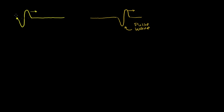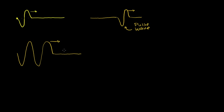Now, if I kept doing that — if I kept going up and down and up and down, essentially if I periodically did it at regular intervals — then my string would look something like this, where the perturbations, or disturbances, are going to move to the right. They're going to move to the right with some velocity. What I want to do in this video is really focus on this type of wave, which you can imagine, since I'm periodically moving this left side up and down. We call this a periodic wave.